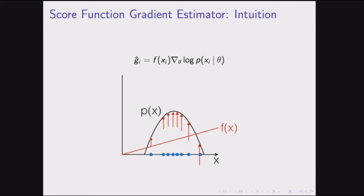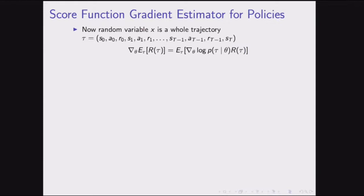Now we apply the score function estimator to the RL setting, taking our random variable x to be a whole trajectory — state, action, reward, state, action, reward, and so on until the end of the episode. To get the gradient of expected reward, we compute grad-log-probability times the total reward.